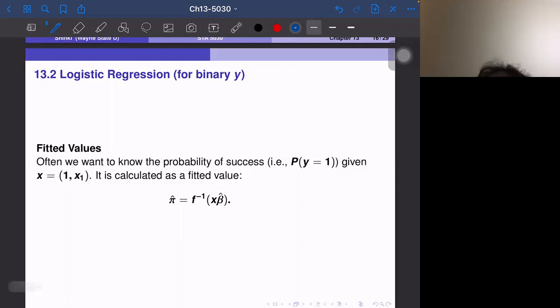Next, fitted values are always of main interest if we are interested in forecasting. Given X value, we want to see the success probability. Success doesn't mean success in real sense, but statistical sense. Y equals one is called success, even if that means death, malignant, or accident.